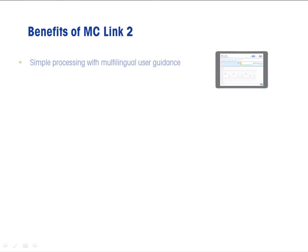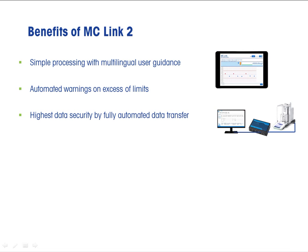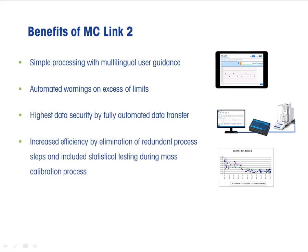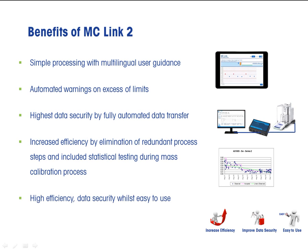The multilingual user guidance enables simple processing for all users. With the online tolerance and limit monitoring, the process is under full control at all times. The interconnectivity of sensors means that the data security and efficiency are improved significantly. The statistical control and reduction in administration increase the efficiency of the mass calibration process. MCLink 2 allows mass calibration with the highest data security, efficiency and simplicity of use.